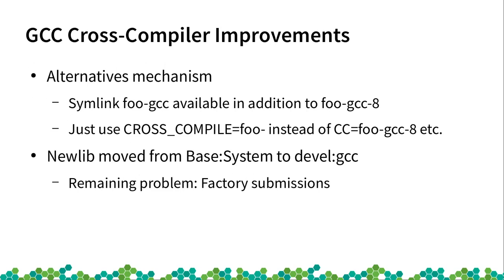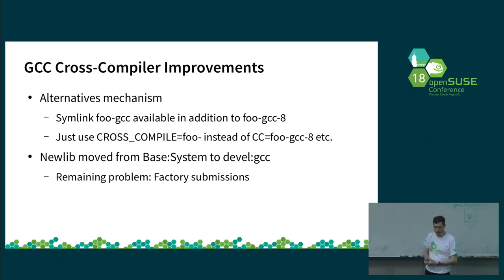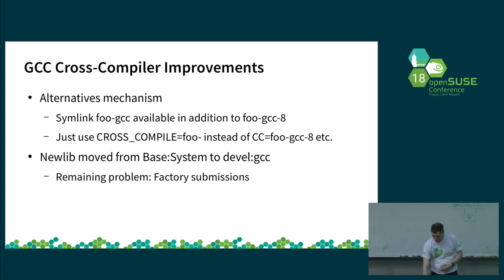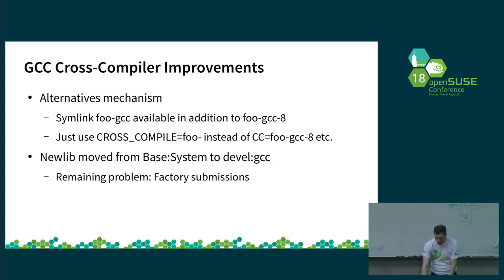A second development: after an announcement phase, we moved the newlib package from the base system — where it sat alongside glibc — into the devel:gcc package. This allows us to better stage changes, since GCC and newlib are now in the same place, especially when adding new toolchains. We still have a cyclic dependency between packages, but we can test before it goes to factory. The remaining problem is we always need to submit both the GCC package and the newlib package (or whatever C library, like avr-libc) together, and that hasn't always worked out — sometimes we had unresolvable GCC cross-packages in factory.